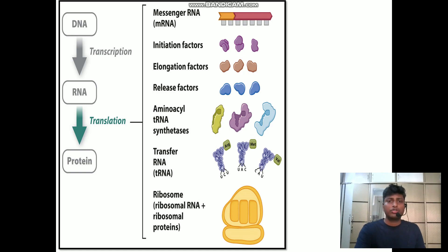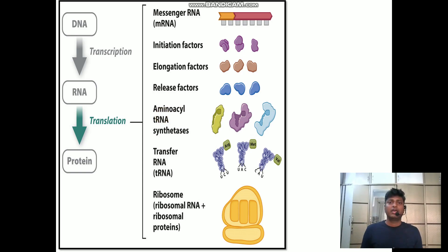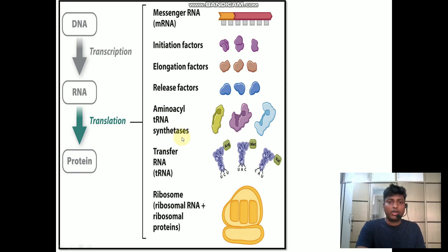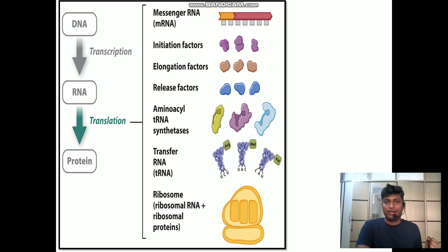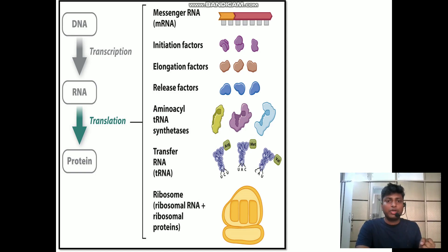Apart from this, there is one particular enzyme which is important for translation: aminoacyl tRNA synthetase. We know that transfer RNA is important for translation as it helps bring amino acids towards the ribosomes — the amino acid attaches to the tRNA. But who helps the amino acid to bind to tRNA? The answer is the enzyme aminoacyl tRNA synthetase, which helps the amino acid bind to the tRNA.